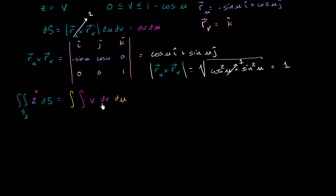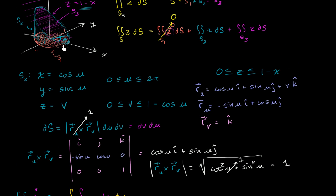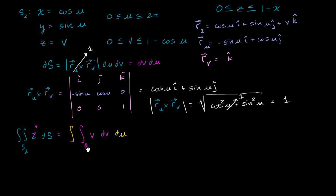The reason I'm choosing to integrate with respect to v first is based on the bounds. v is bounded on the low end by 0, but on the high end it's bounded by a function of u — its upper bound changes depending on what our x value is. We have a different height to reach, and since it's a function of u, we integrate v first. The boundaries are 0 and 1 minus cosine of u. This will give us a function of u, then we integrate with respect to u from 0 to 2π for a straightforward number.